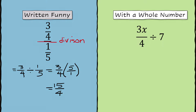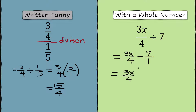If you have to divide with a whole number, again, we write that whole number as a fraction with a denominator equal to 1. And with division, you flip the second one. So 3x over 4 divided by 7 becomes 3x over 4 times 1 over 7. Multiply straight across, we get 3x over 28.